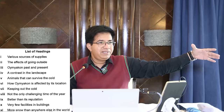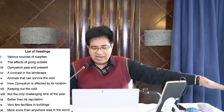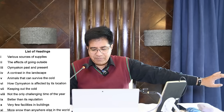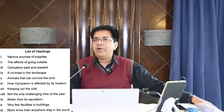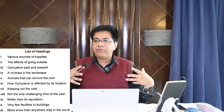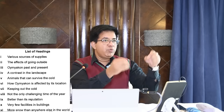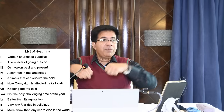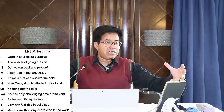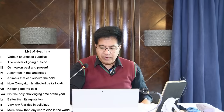Heading number six: 'How Oymyakon is Affected by Its Location' — you already know this from paragraph E. Heading number seven: 'Keeping Out the Cold.' For example, I'm wearing this sweater to keep out the cold. In one paragraph they will say people use firewood, wear warm clothes, and make houses that keep the cold out.